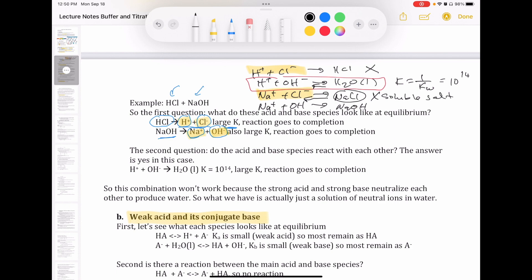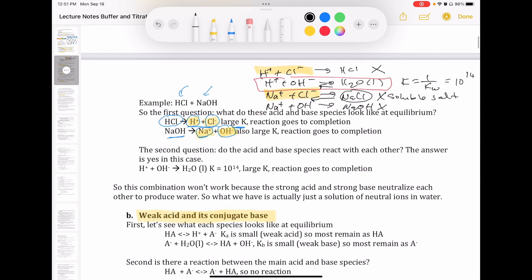This is actually just the reverse of that dissociation reaction of NaOH. And again, we know that NaOH is a strong base. It's a soluble hydroxide salt. It's going to completely dissociate. So again, another reaction that we don't have to worry about. So of all the four potential combinations of the cation and anion, the only one that we have to worry about is the water formation reaction. This is a large K. The reaction goes to completion.